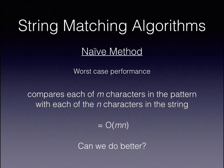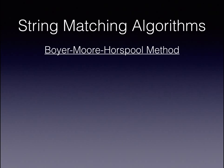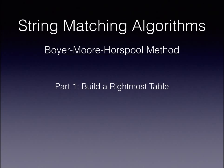This is where the Boyer-Moore-Horspool algorithm comes in. The Boyer-Moore-Horspool algorithm is split into two parts: the first part is building a rightmost table from the input pattern, and the second part is matching the string using the rightmost table.